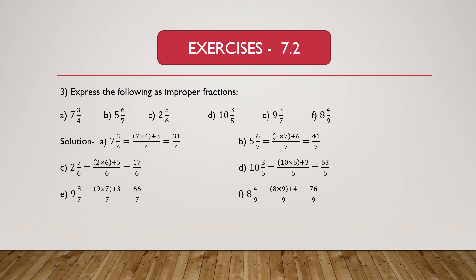Part C is given as 2 and 5/6. We have to express this mixed fraction as an improper fraction. We know improper fraction equals whole multiplied by denominator, and the result added to numerator, divided by denominator. Here 2 is the whole part and 5/6 is the proper fraction. So 2 multiplied by 6 is 12, and 12 plus 5 equals 17, with denominator 6. So 2 and 5/6 equals 17/6.